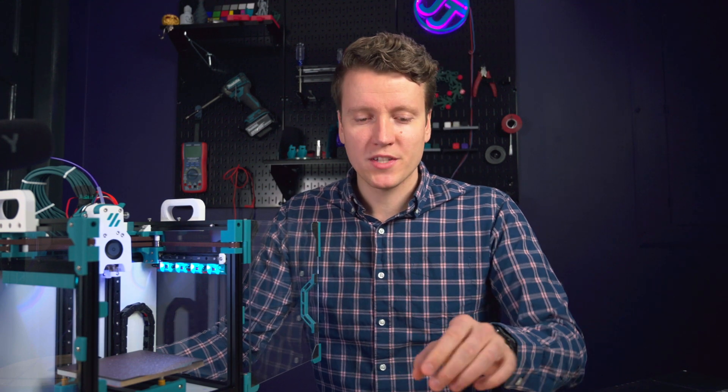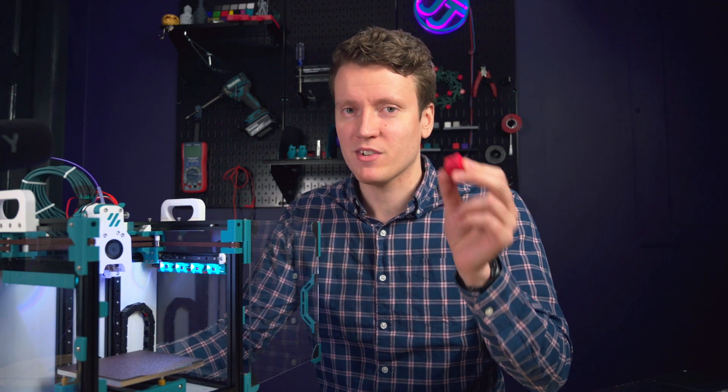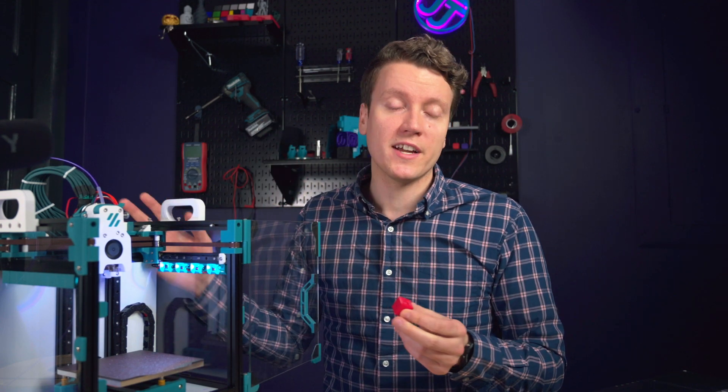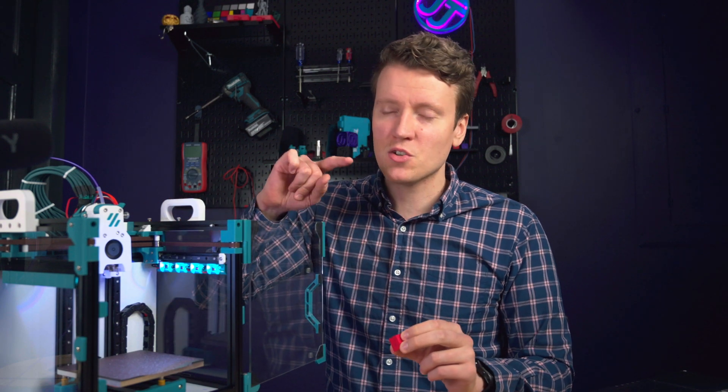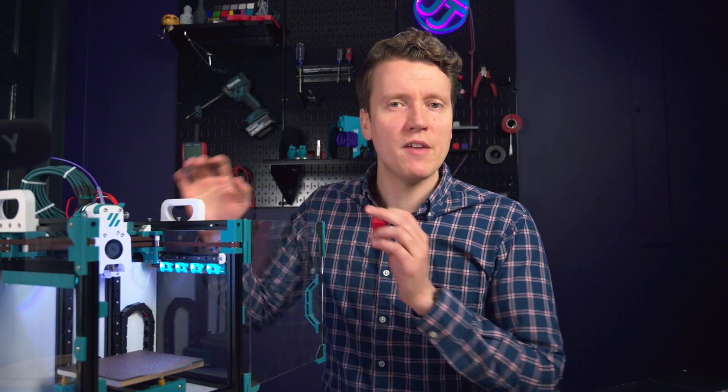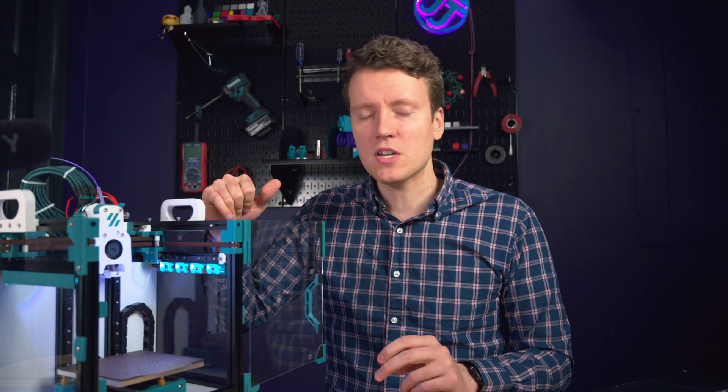But now just because your extruder is calibrated correctly does not mean you'll get perfectly extruded prints every single time. There are a lot of other factors that go into creating a good quality print, but now you know the issues will not be your extruder motor. If you are getting random over or under extrusions, if it's something that's suddenly changed, I would say check your nozzle, see if there's a clog in there.